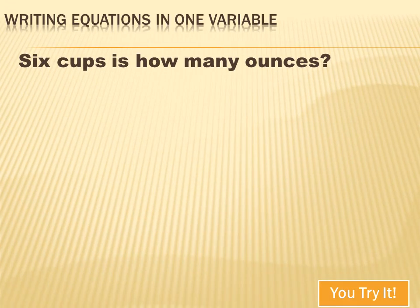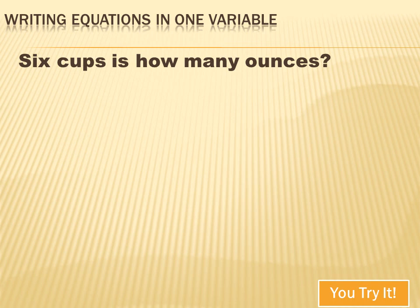Now you try this one. Hit your pause button, write down the translation, then hit your forward key to move on to the answer. Let's translate: 'six cups is how many ounces?' Six translates to the number 6. We'll keep 'cups' as-is or use an abbreviation. 'Is' means equals. 'How many' is the question — that's our variable x. And 'ounces' becomes the abbreviation oz. So the translation is: 6 cups = x oz.